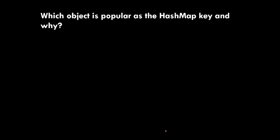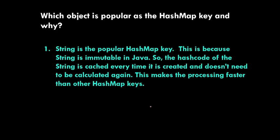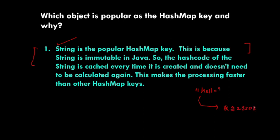Moving to the next question: which object is most popular as a HashMap key and why? String is the most popular HashMap key. If you have a String and create an object using a string literal or the new keyword, there are two methods involved in HashMap: hashCode() and equals(). For example, for the literal "hello", a hash code like 929208 will be calculated.